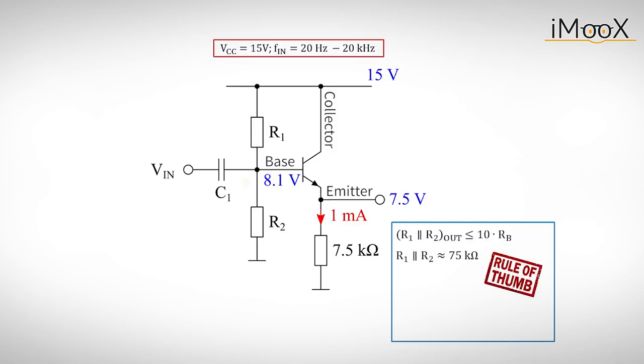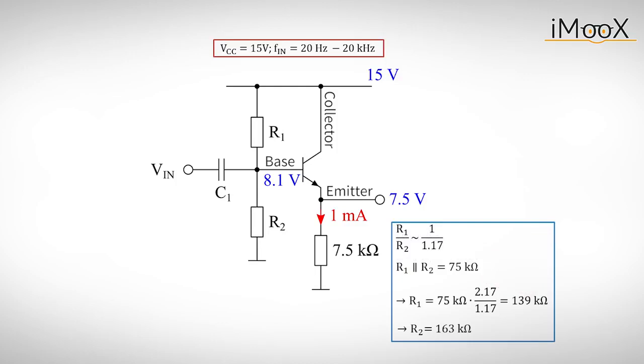According to the second rule of thumb, the output impedance of the DC bias source, in this case the impedance looking into the voltage divider, must be at least 10 times smaller than the input impedance looking into the base. This gives us a parallel resistance of about 75 k for R1 and R2. With the ratio of 1 to 1.17 in mind, we get 139 k for R1 and 163 k for R2.